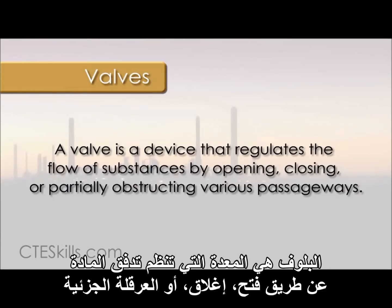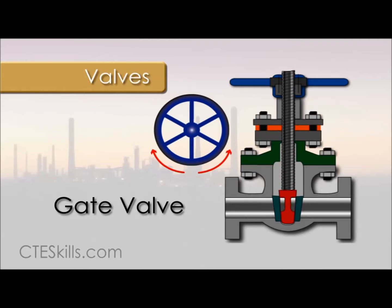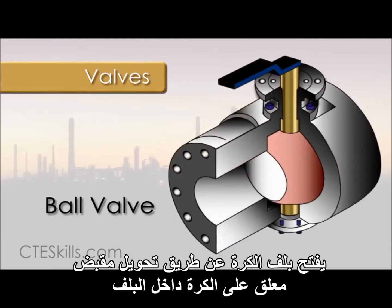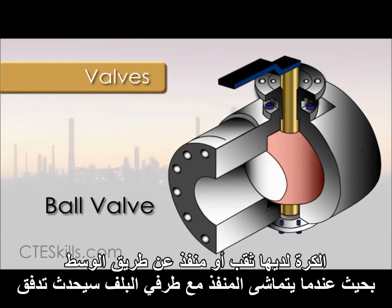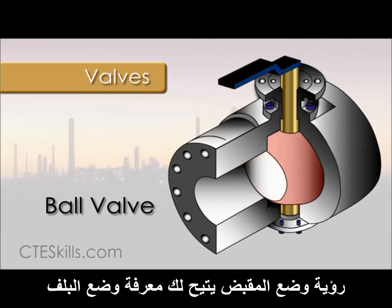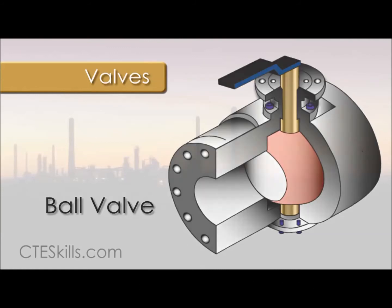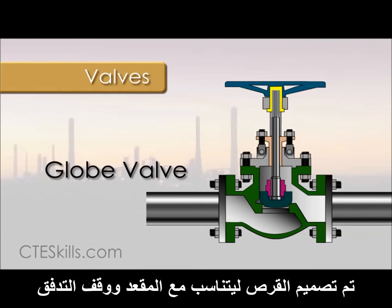A valve is a device that regulates the flow of substances by opening, closing, or partially obstructing various passageways. A gate valve is a valve that opens by lifting a round or rectangular gate or wedge out of the path of fluid. A ball valve opens by turning a handle attached to a ball inside the valve. The ball has a hole or port through the middle, so that when the port is in line with both ends of the valve, flow will occur. When the valve is closed, the hole is perpendicular to the ends of the valve, and the flow is blocked. The handle position lets you see the valve's position. A globe valve places a movable metal disc in the path of the process flow. The disc is designed to fit into the seat and stop flow.